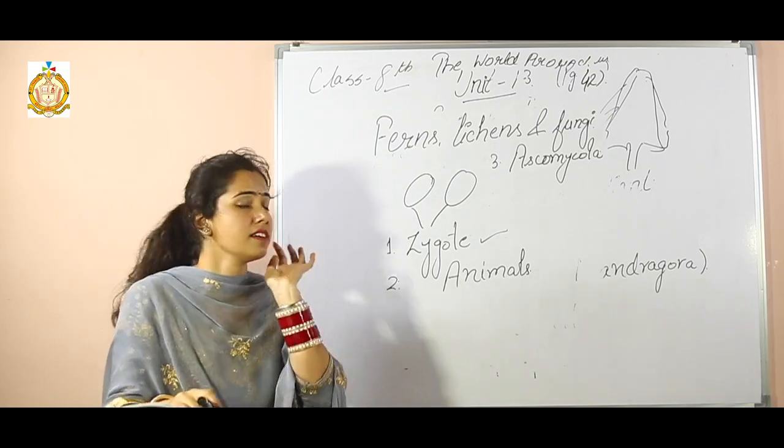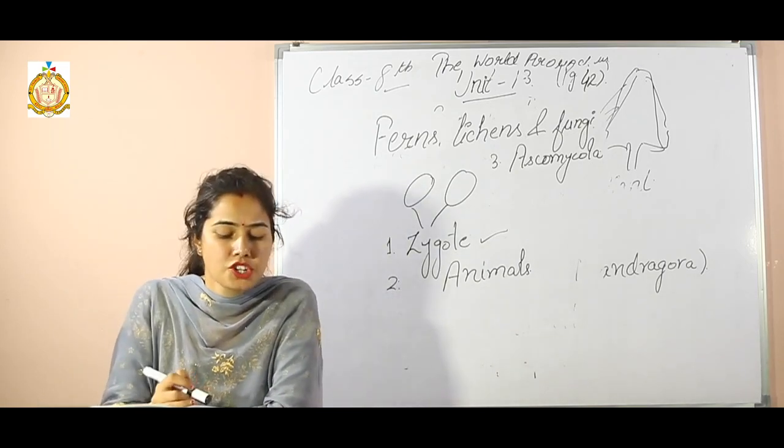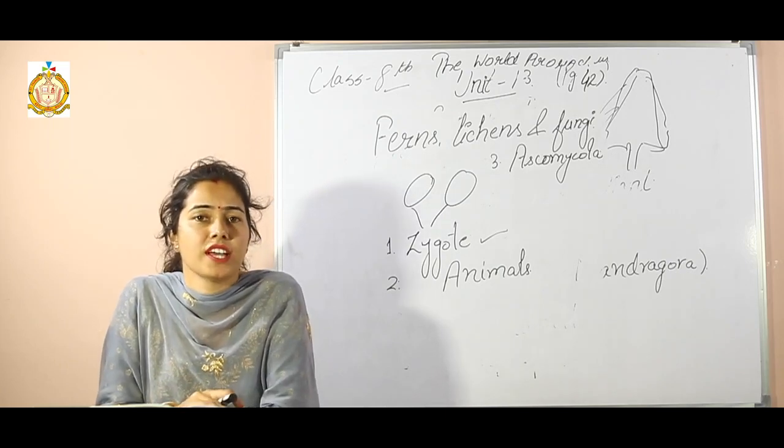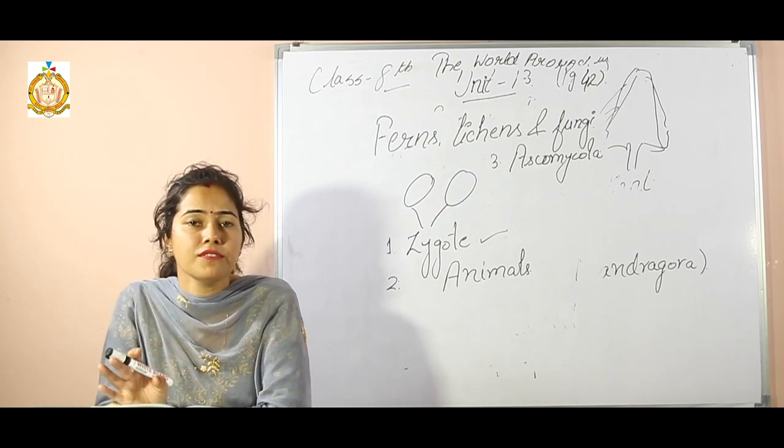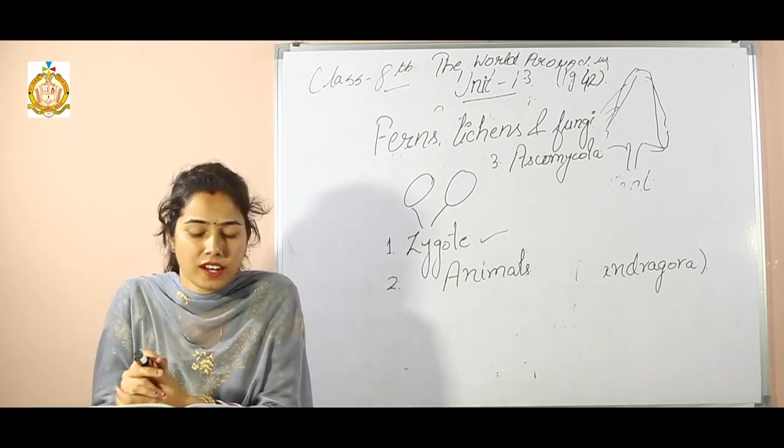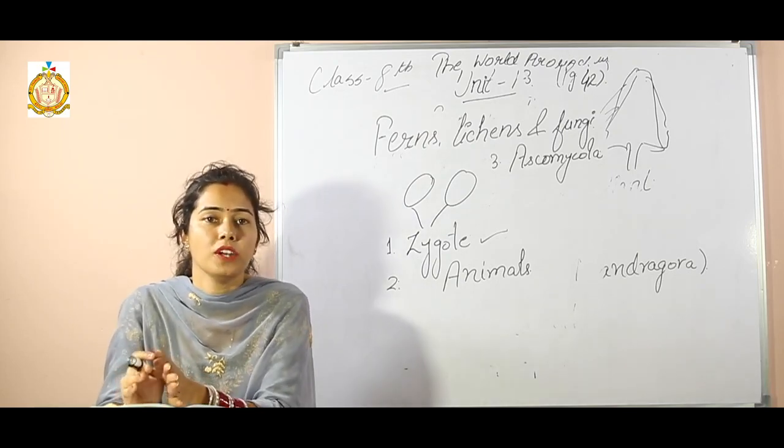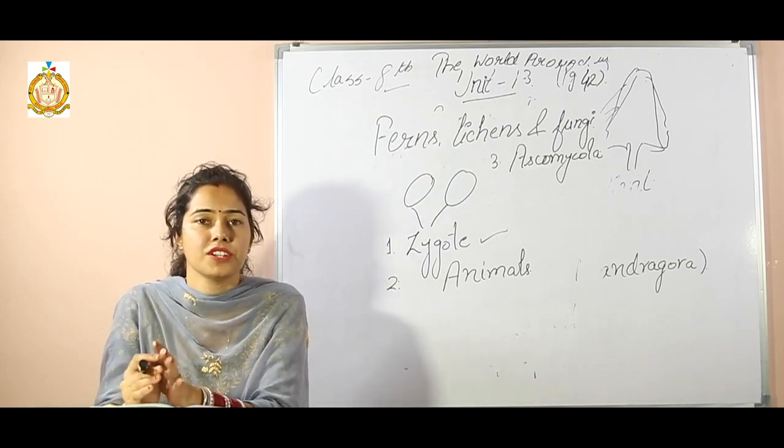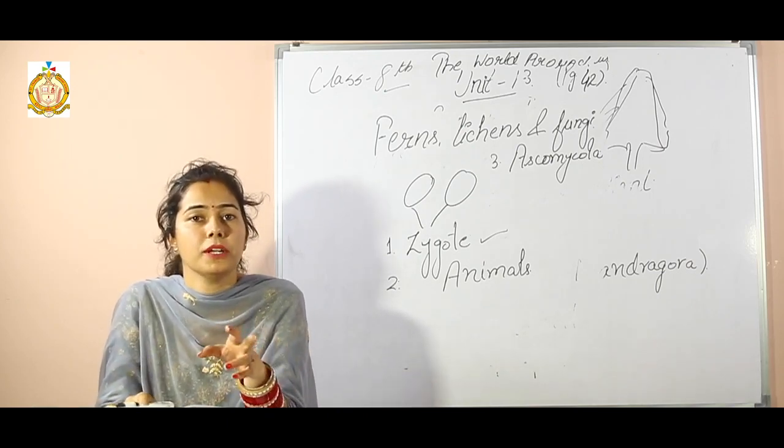The fifth question is which of the following do all fungi have in common? There are three options: coenocytic hyphae, sexual life cycle, and absorbing nutrients. Only one character is common in fungi, which is absorbing nutrients. All fungus absorb nutrients from other things.